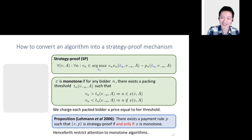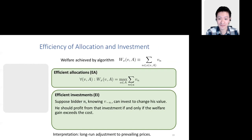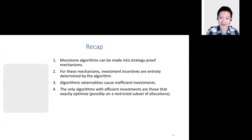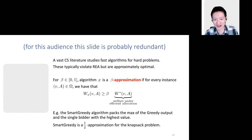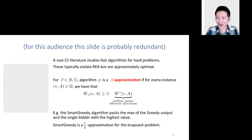Moving to approximation algorithms: for any beta between 0 and 1, an algorithm is a beta-approximation if for every instance it delivers welfare at least beta times the efficient welfare. For example, the smart greedy algorithm — which packs the maximum of the greedy output and the single bidder with the highest value — is a half-approximation for the knapsack problem. We want to know: does a nearly efficient allocation rule in a strategy-proof mechanism yield nearly efficient investments?